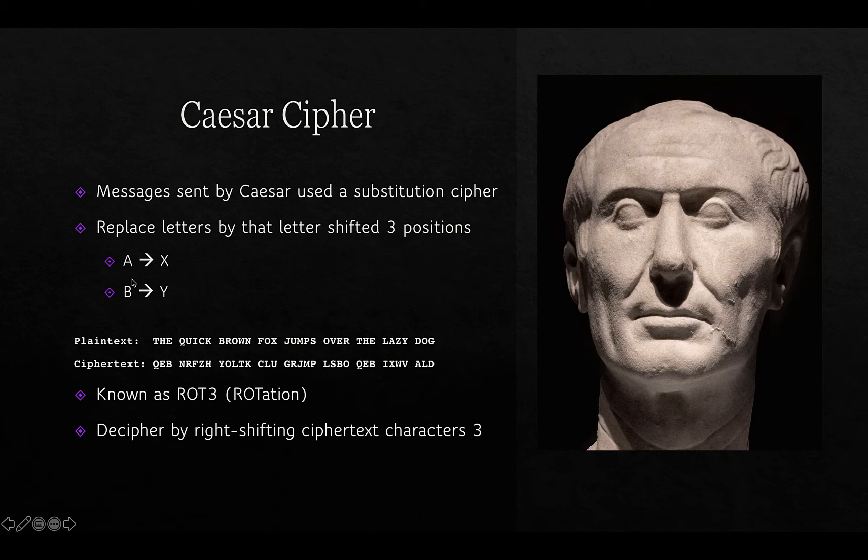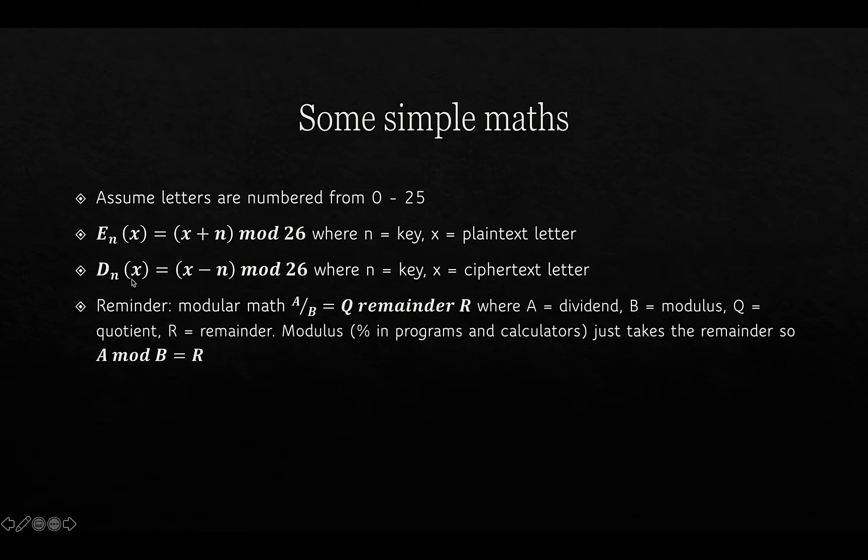This type of substitution cipher is known as ROT3 because we rotate by three. We can rotate by any number of characters, and if we wanted to, we could include numbers and other characters and rotate by that amount as well. It's a circular process — it always wraps back on itself. To decipher it, we simply right-shift the ciphertext characters by the same amount, in this case three.